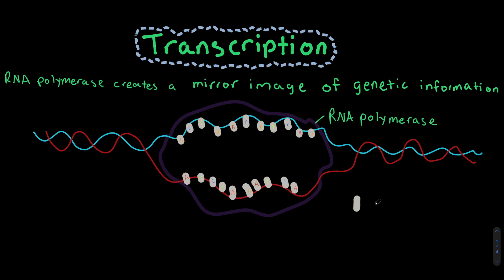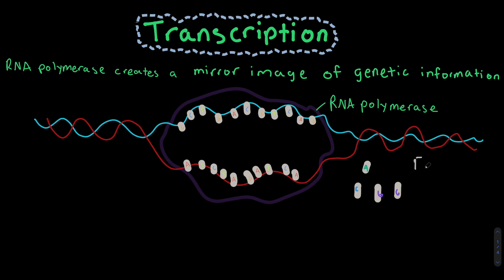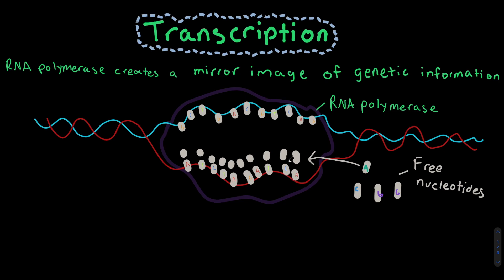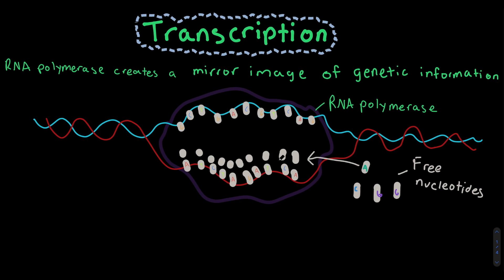In transcription, we will have free nucleotides that code for a specific strand of the DNA which was opened up by our RNA polymerase. These nitrogenous bases each match together. For example, adenine would bind with uracil — since we're making RNA — cytosine would bind with guanine, and thymine would bind with adenine. When each of these nucleotides bind together, they form this long strand which represents our messenger RNA. The RNA polymerase goes throughout the double helix unwinding it, adding to the buildup of the mRNA. This process continues, which shows transcription.